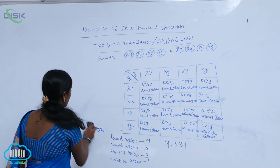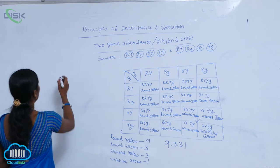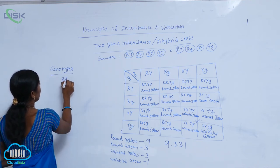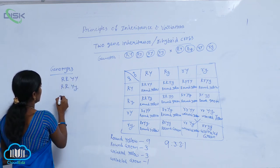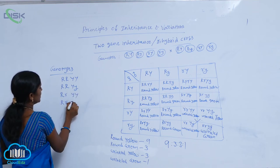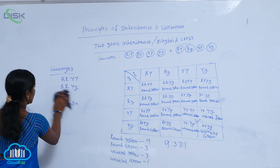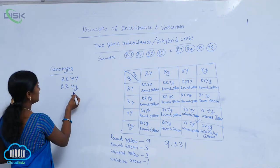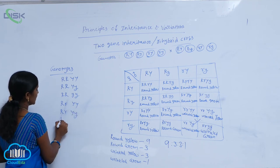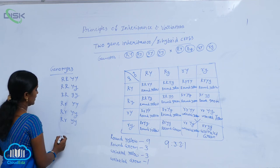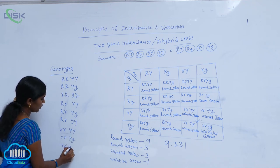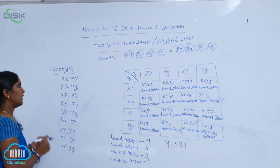For the genotypic ratio, the genotypes are: capital R capital R capital Y capital Y (1), capital R capital R capital Y small y (2), capital R capital R small y small y (1), capital R small r capital Y capital Y (2), capital R small r capital Y small y (4), capital R small r small y small y (2), small r small r capital Y capital Y (1), small r small r capital Y small y (2), small r small r small y small y (1). That gives 9 genotypic variations.